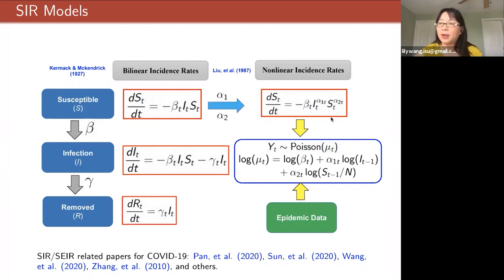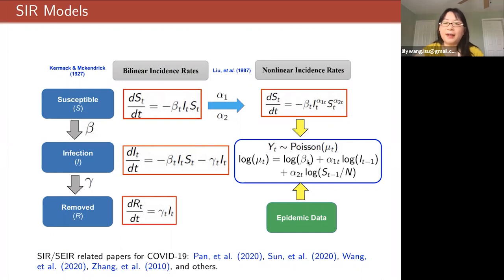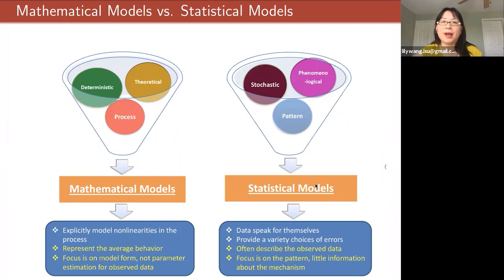Based on this model, we can bring in the epidemic data and instead of solving an ODE we can consider a regression problem. If I use I_t as the cumulative active cases and Y_t as the new cases, then we can consider a generalized linear regression model to fit the data and get estimates of the parameters. That's the basic idea of the model. Before I introduce our modeling and forecast, I want to talk about the two main scientific models you often see in the news about COVID-19.